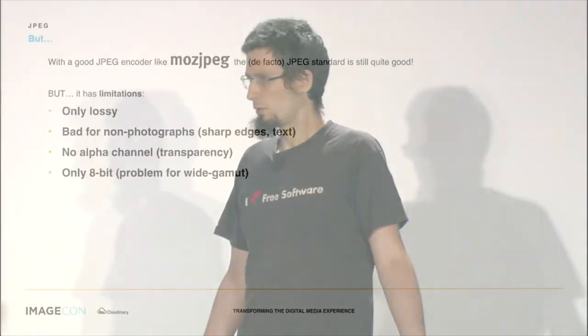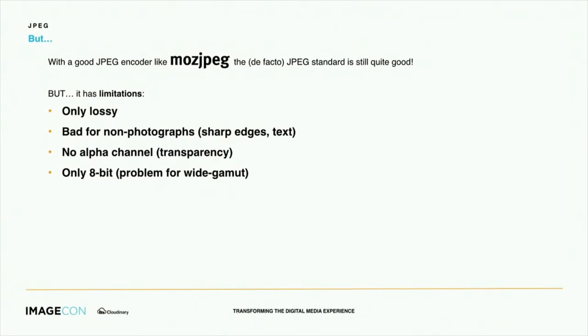But it has some limitations. It can only do lossy, and in some cases you really need lossless. It's not very good at non-photographic images — so if you have illustrations, text, sharp edges, the DCT isn't really good at those things. It cannot do transparency, and it's limited to 8-bit. Currently, with HDR, 10-bit displays, and wide gamut, this is starting to become more and more of a limit.